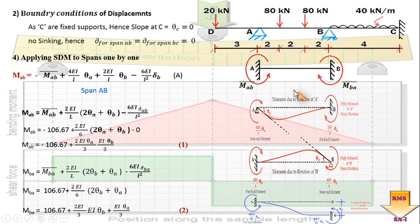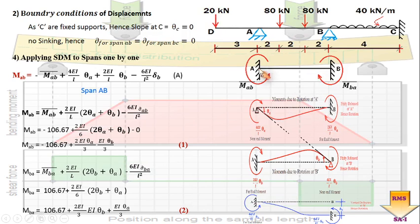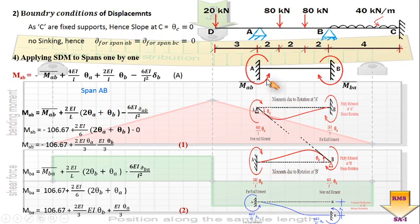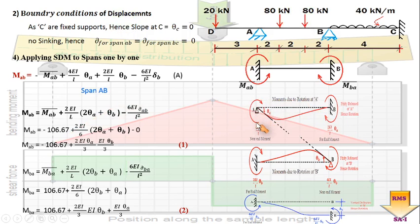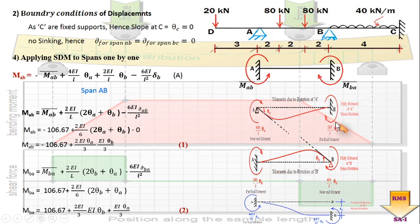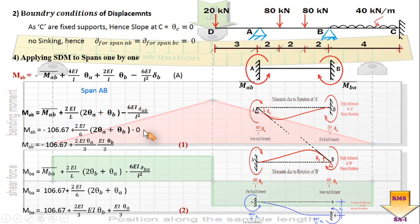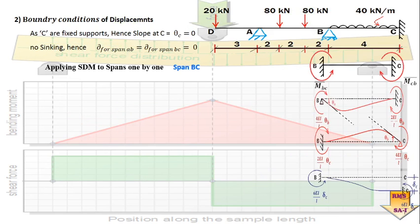The free body diagram of span AB shows the various moments induced due to the various displacements — initially assumed or given in the problem. In order to have rotation about this point, support A is assumed as a hinge support. This causes induction of moment due to rotation theta B, and half of that is transferred to the far end — this is the carry-over of moment to the far end. This is how we apply the governing equation for each span.